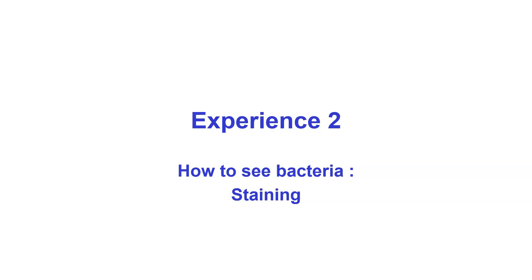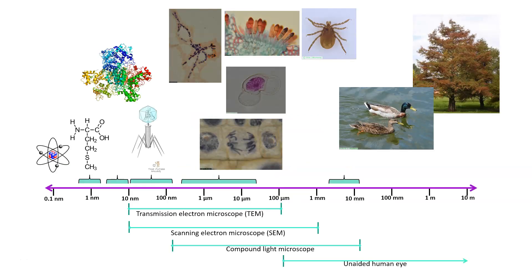We're going to start looking at what's important in experience 2, which basically asks how do we see bacteria, and we talk about staining. When we look at the size of things we're going to deal with, you can see all sorts of things that go from the tiny little atom on the left-hand side all the way up to a great big tree.